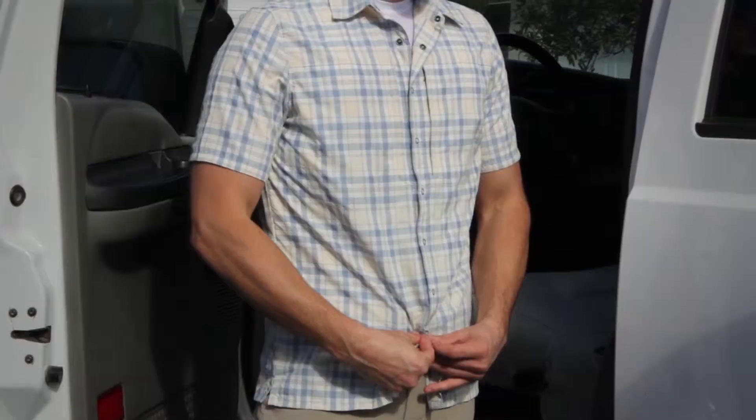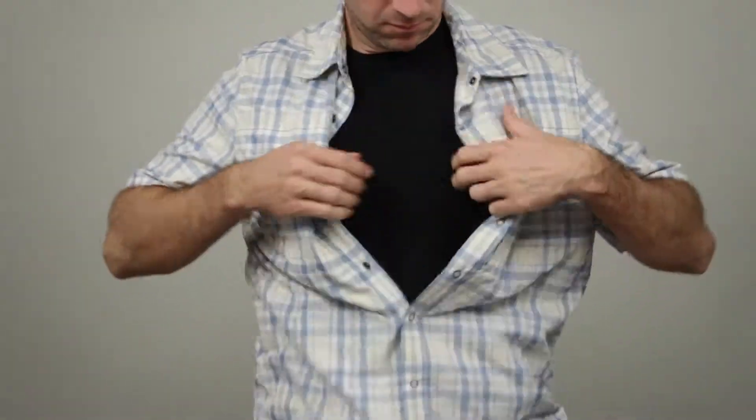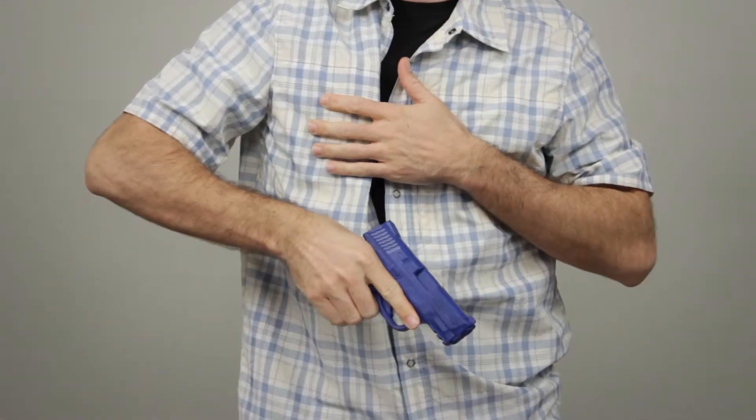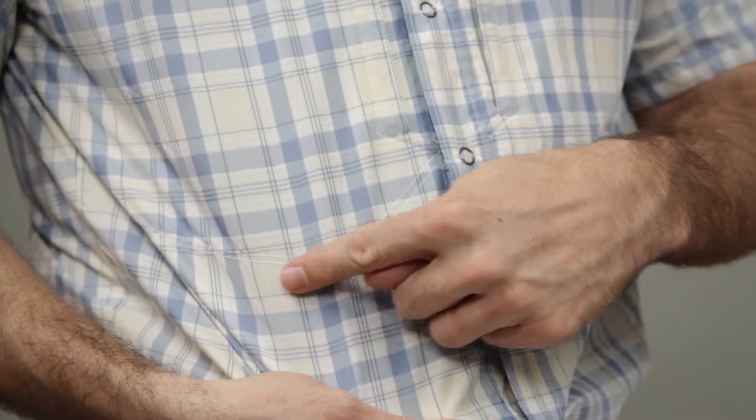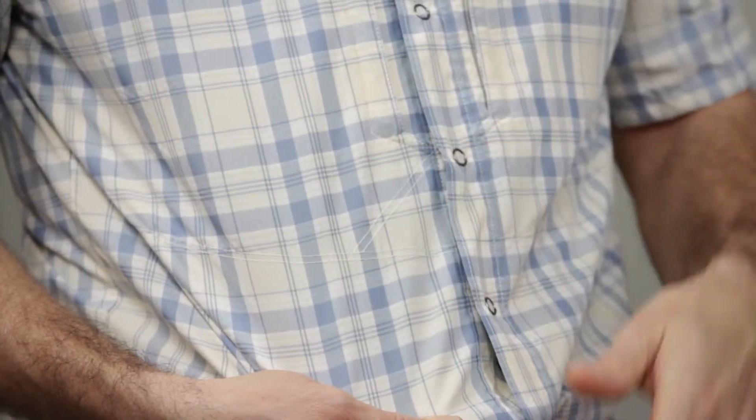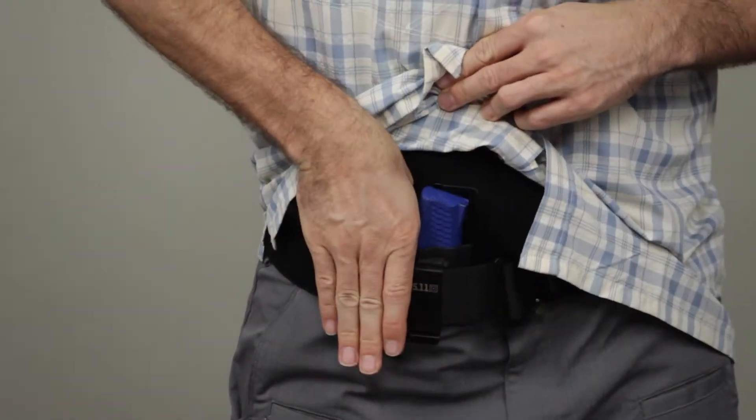Featuring our unique rapid-drop placket, this revolutionary design grants immediate access to a shouldered sidearm. There's reinforced box stitching at key stress points to ensure fast and reliable access.